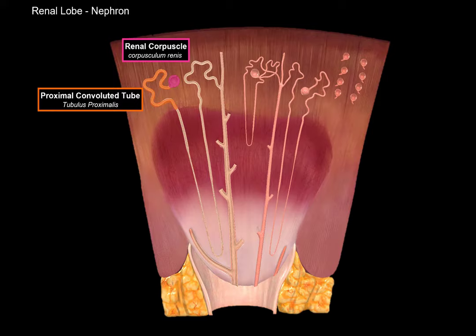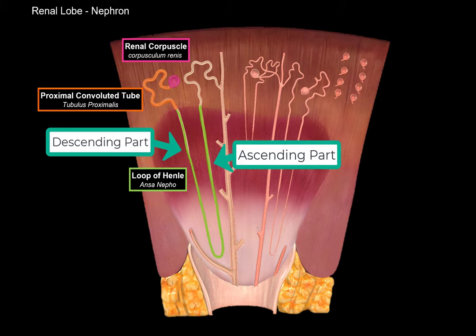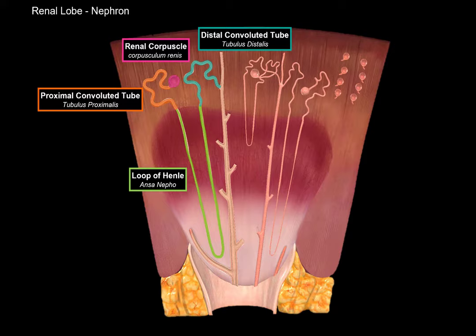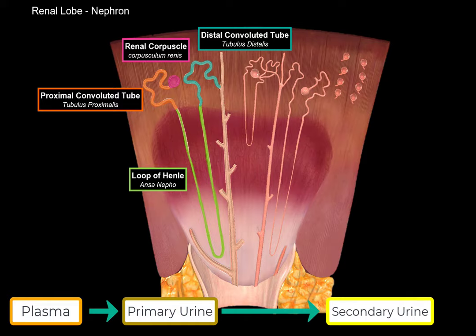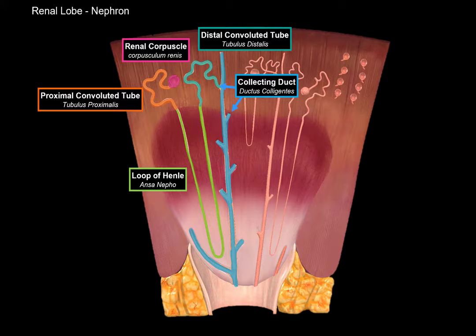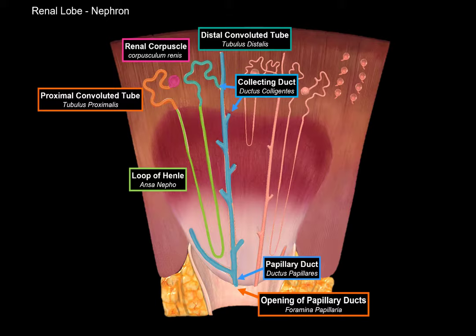After the renal corpuscle is the proximal convoluted tubule, which also lies in the cortex, and has two parts: a convoluted part that curves and a straight part. The nephron then continues into the renal pyramids as the loop of Henle, with a descending part and an ascending part, which extends back up to the renal cortex as the distal convoluted tubule. At this point, the plasma has been filtrated into primary urine, electrolytes and minerals have been reabsorbed and secreted throughout the tubule, and the urine is now finished as secondary urine — what we generally call urine. The urine continues through the collecting ducts, which fuse to form the papillary ducts, which open as small openings into the minor renal calyces.